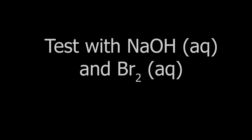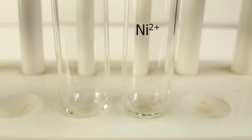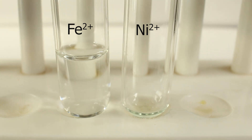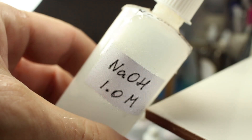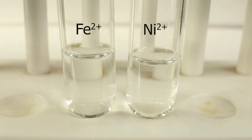What can be done with nickel-2-hydroxide? If you oxidize it with bromine, it would give a very characteristic black precipitate. Let's look at this test now. Again, I take the same pair of substances — iron-2-sulfate and nickel-2-sulfate. I really need very low concentrations, so I've added distilled water.